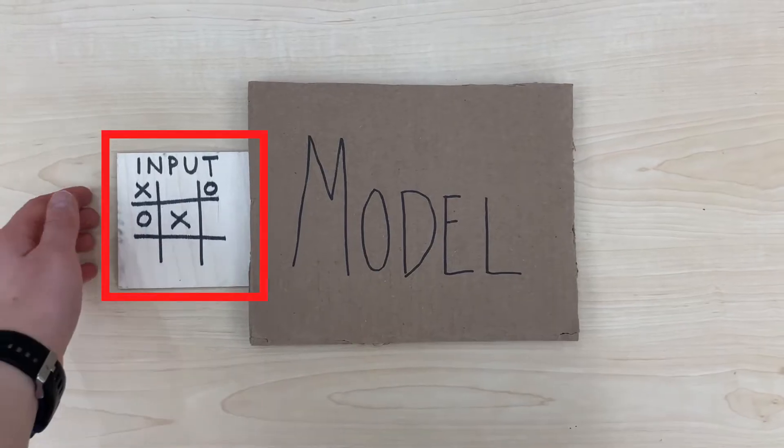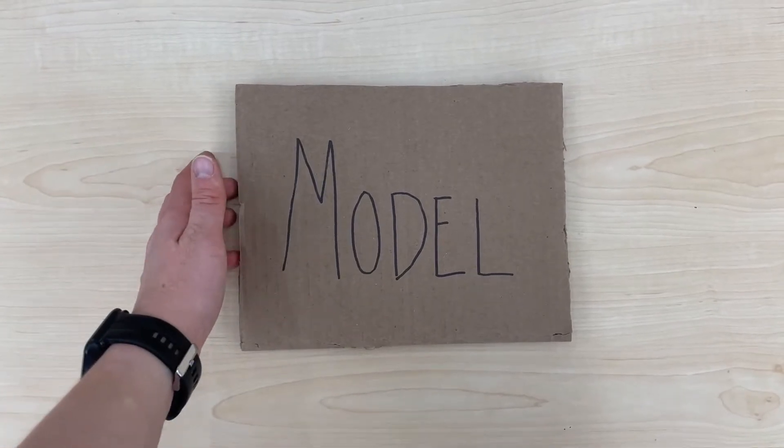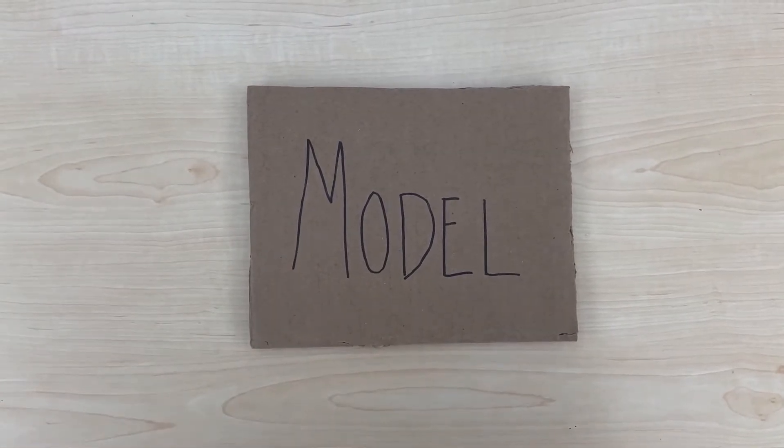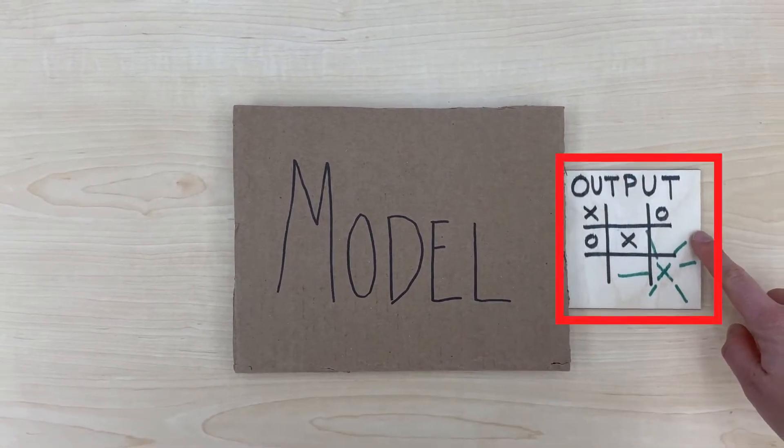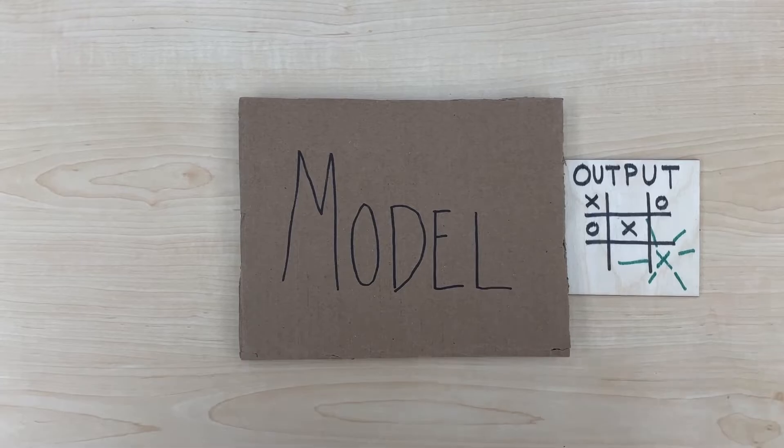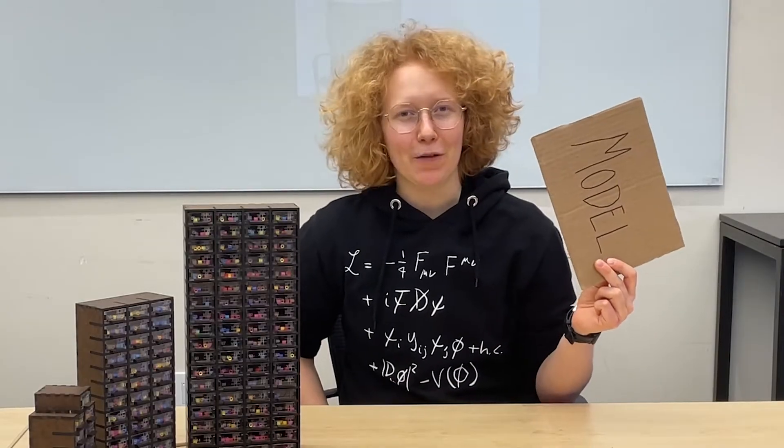Artificial intelligence can often seem like a black box of magic. We pass an input, like an image of a game board, through a model that after many small computations produces an output, like the next best move to play. But what if we could peek inside that black box to better understand how it works?